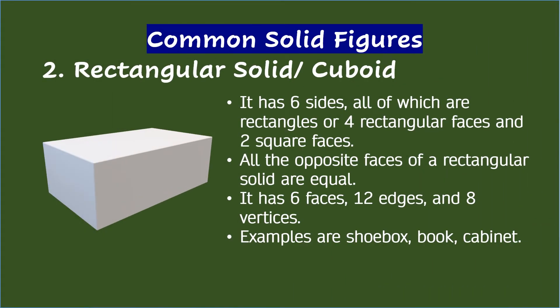2. Rectangular solid, also known as cuboid. It is a solid figure that has six sides, all of which are rectangles, or maybe four rectangular faces and two square faces. All the opposite faces of a rectangular solid are equal. It has six faces, 12 edges, and eight vertices. Common examples are shoeboxes, book, and cabinet.